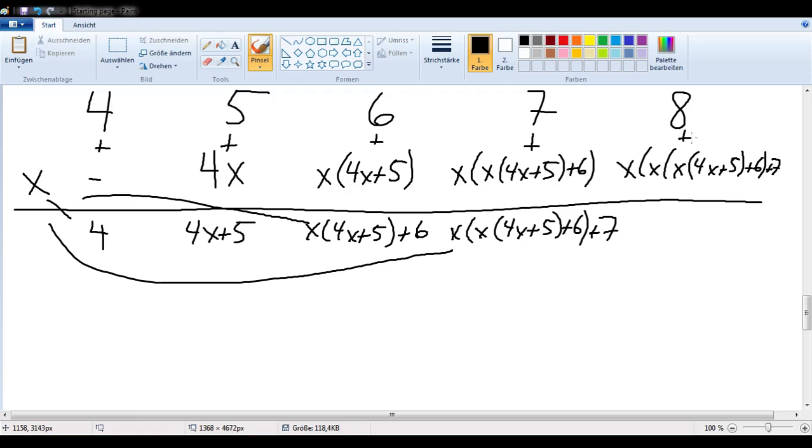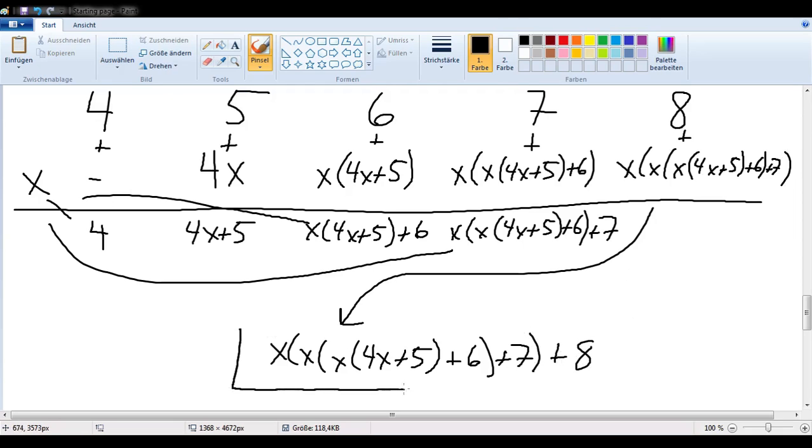And now I have to add one more time. I'm going to write that out over here. So here, what I get is x times, x times, x times 4x plus 5 plus 6 plus 7. Sorry, I had forgotten one parenthesis here. And then plus 8. So that's what we get using Horner's method.